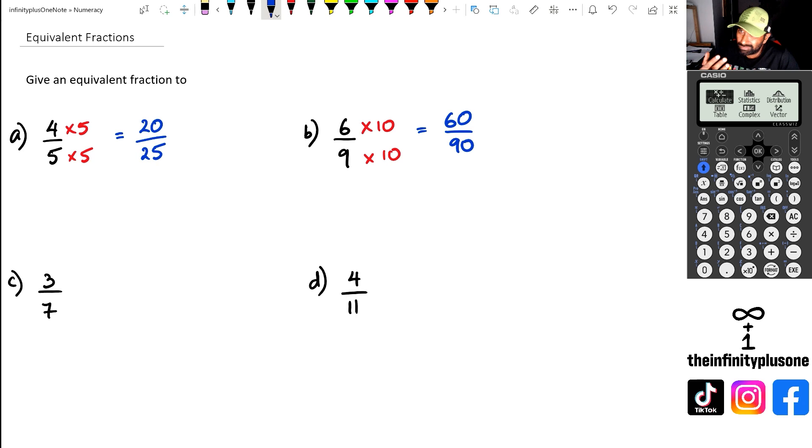Now you might be wondering, hang on, for question A here, what if I decide to do another number? You're allowed to do that. Because if you had four-fifths there, and you decide I'm going to multiply the numerator by four and the denominator by four, then you're going to get 16 over 20. So basically, 16 over 20, 20 over 25 is all the same as four over five.